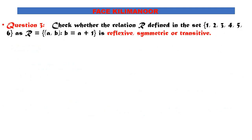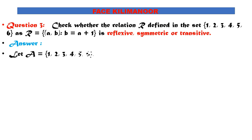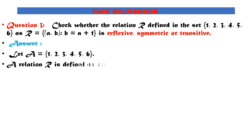Moving to question 3: Check whether the relation R defined in the set {1,2,3,4,5,6} as R = {(a,b) : b = a+1} is reflexive, symmetric, or transitive. If a = 1 then b = 2; if a = 2 then b = 3, and so on. We can form the relation pairs accordingly.